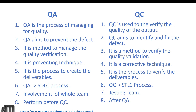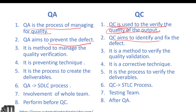QA is the process of managing for quality, while quality control is used to verify the quality of the product. QA aims to prevent defects, and QC aims to identify and fix defects — in testing, we raise defects and get them fixed by the development team.